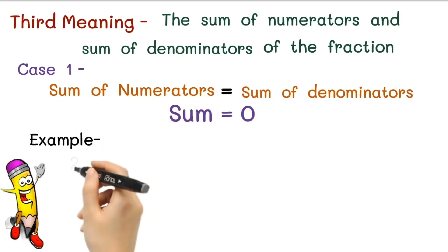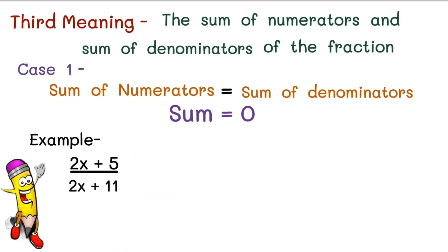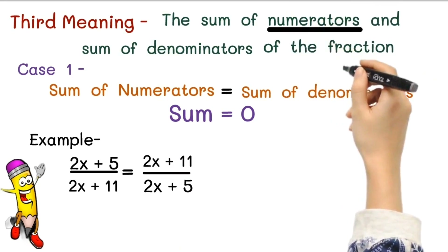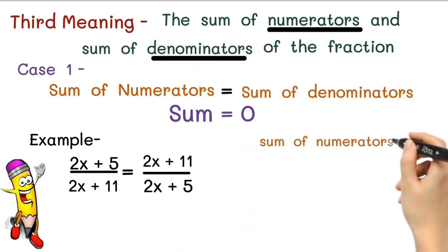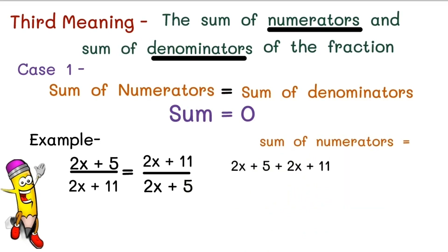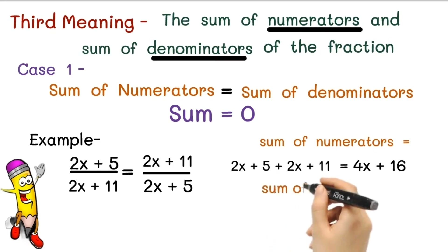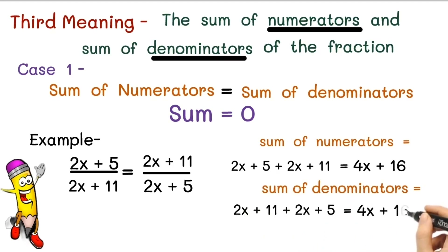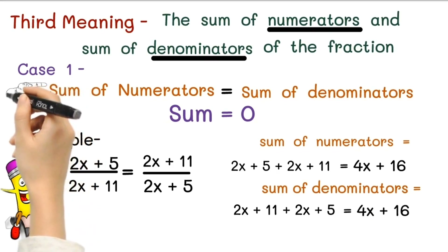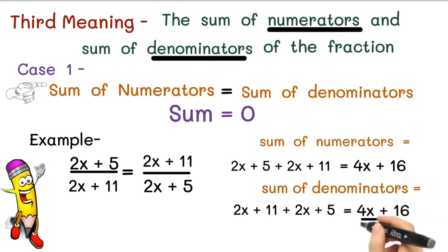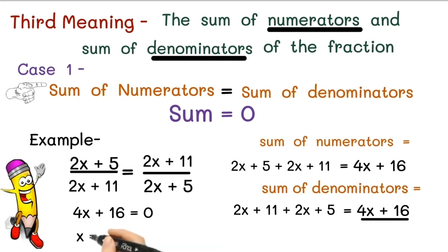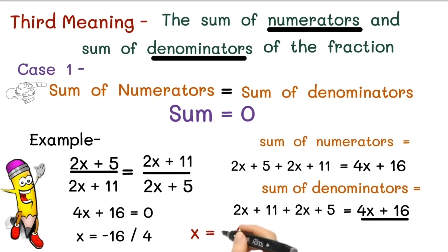Example for Case 1: (2x + 5)/(2x + 11) = (2x + 11)/(2x + 5). The sum of numerators = (2x + 5) + (2x + 11) = 4x + 16. The sum of denominators = (2x + 11) + (2x + 5) = 4x + 16. Since the sums are equal, we equate 4x + 16 = 0, giving x = -16/4, so x = -4. This is the solution of the given equation.